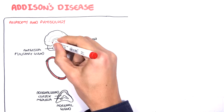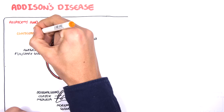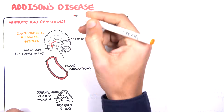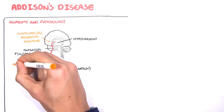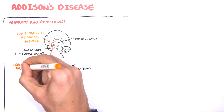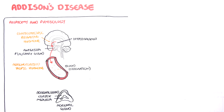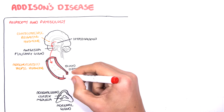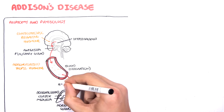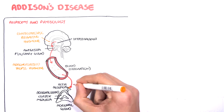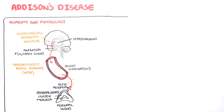The hypothalamus produces a hormone called corticotropin-releasing hormone. Corticotropin-releasing hormone stimulates cells within the anterior pituitary gland to secrete adrenocorticotropic hormone, or ACTH for short. ACTH will then enter circulation and travel towards the adrenal glands, specifically the adrenal cortex, where it will stimulate the adrenal cortex to produce and secrete hormones.